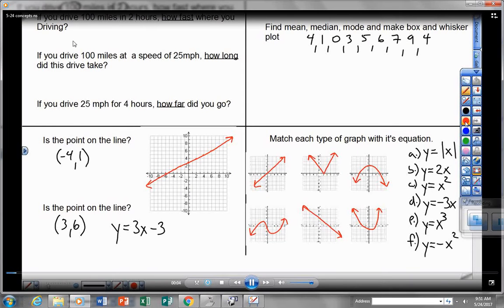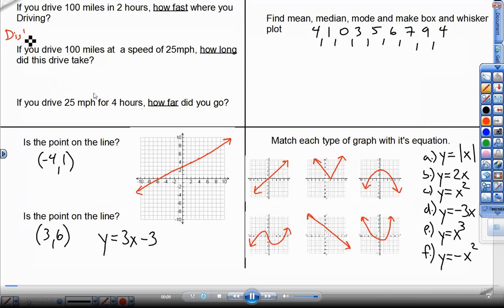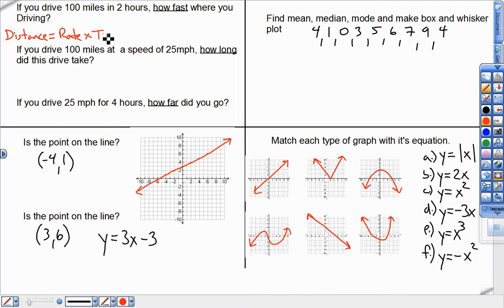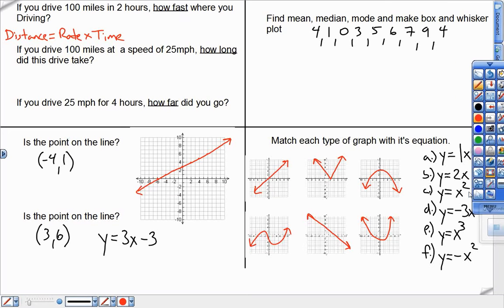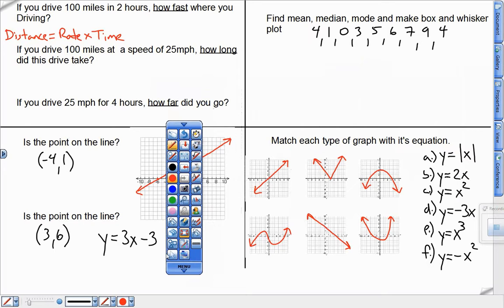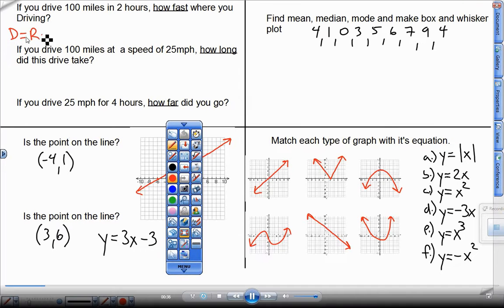The distance equals rate times time problems. For those, make sure that you know the distance formula, that distance always equals the rate that you're traveling times how long you're going at that speed. So rate times time is always distance. So for these problems, I'm going to have you plug in the numbers that you have where they go and then do the algebra after. So the formula in the condensed form is the D=R×T formula, D equals R times T.